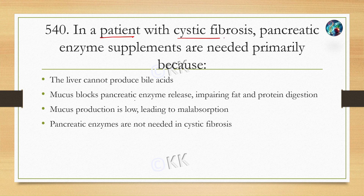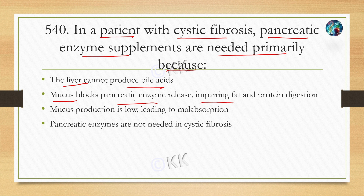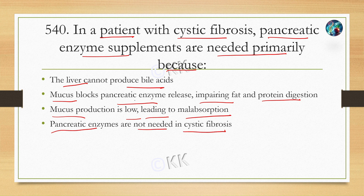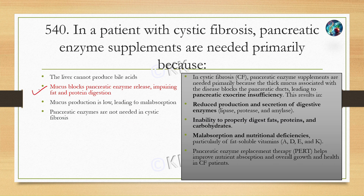In patients with cystic fibrosis, pancreatic enzyme supplements are needed primarily because — Option A: the liver cannot produce bile acids, Option B: mucus blocks pancreatic enzyme release, impairing fat and protein digestion, Option C: mucus production is low, leading to malabsorption, Option D: pancreatic enzymes are not needed in cystic fibrosis. The correct answer is Option B: mucus blocks pancreatic enzyme release, impairing fat and protein digestion.